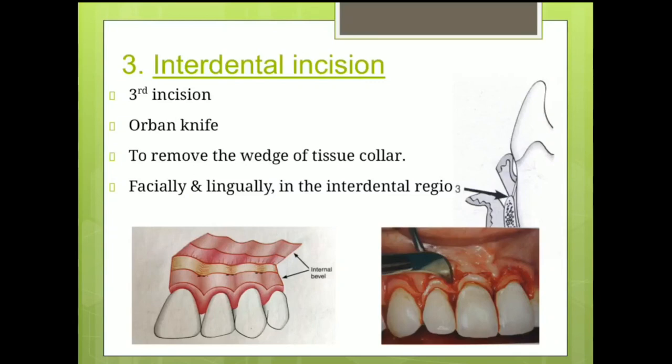Finally, the third incision is the interdental incision, which is given sometimes using an Orban's knife and mostly using BP blades 11 and 12. It is given perpendicular to the other two incisions so as to detach the wedge of pocket wall attached to the alveolar bone crest. It is given on the facial and lingual aspects of the teeth.